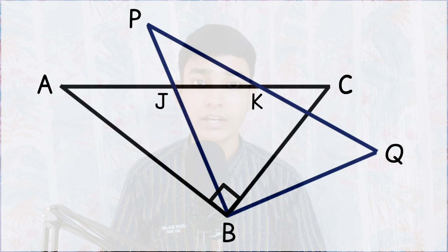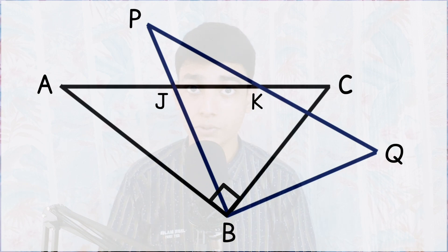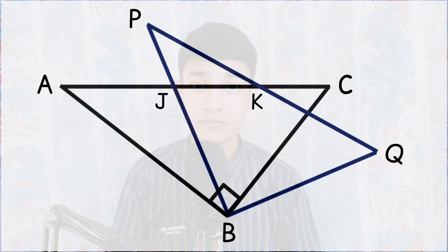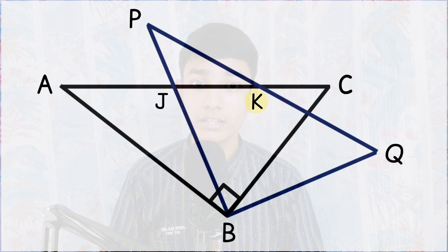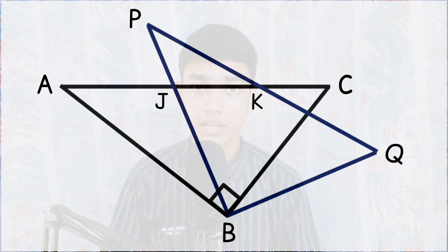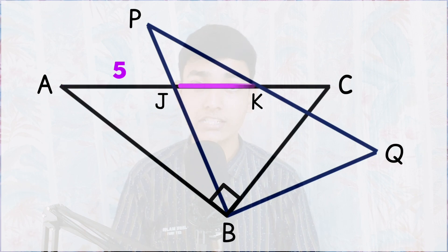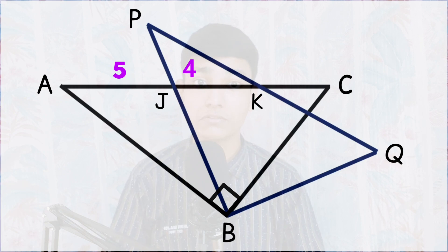Note that point B is common between these two triangles, and both triangles are congruent to each other. The rotation is specified by the fact that point K is the midpoint of line segment BQ. The given lengths are: AJ = 5cm, JK = 4cm, and we are asked to find the length of line segment CK.